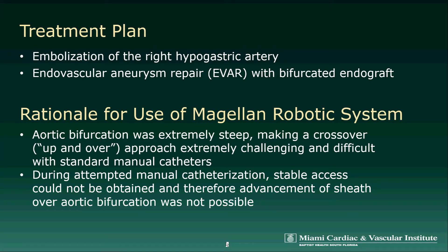The rationale for utilization of the Magellan robotic system in this case was that the aortic bifurcation was extremely steep, making a crossover or up-and-over approach extremely challenging with standard manual catheters. In fact, during attempted manual catheterization, although we were able to advance a guide wire to the contralateral iliac artery, it was impossible to advance the sheath over the aortic bifurcation as stability could not be achieved and the sheath kept buckling out.